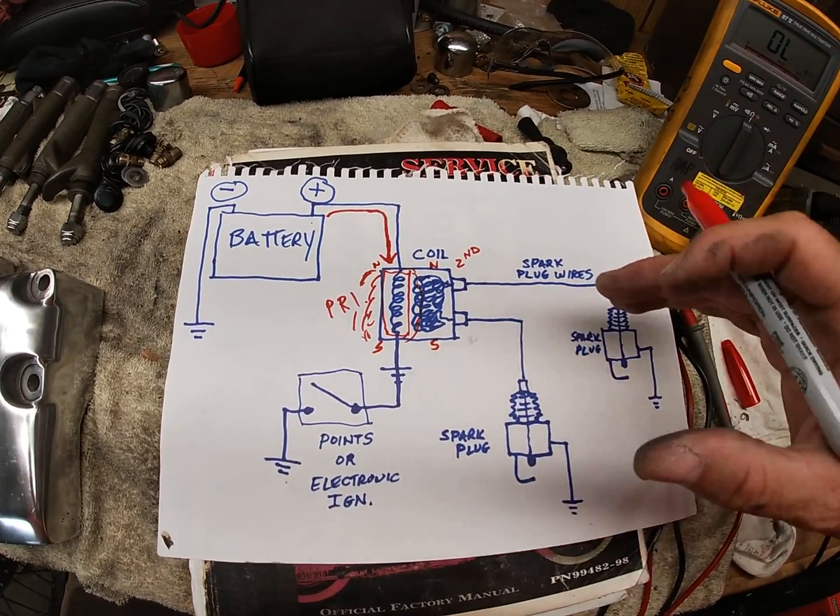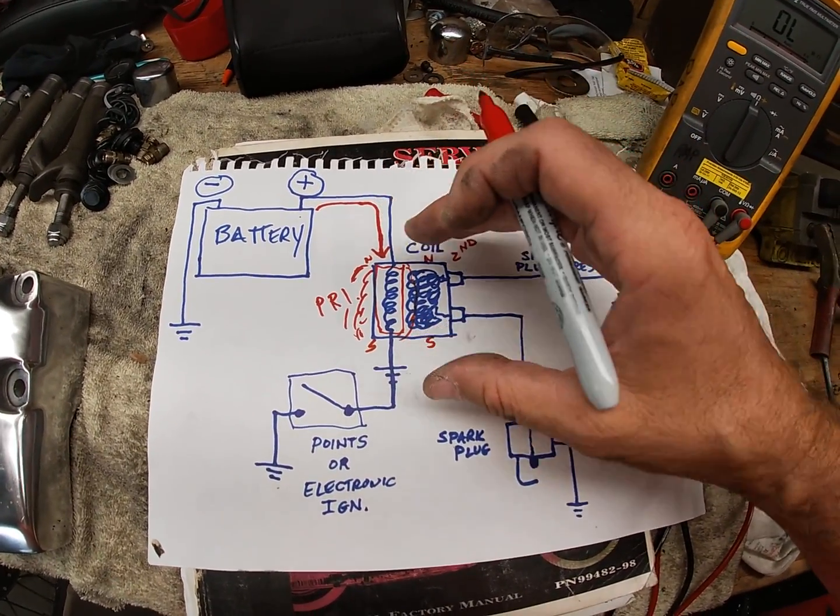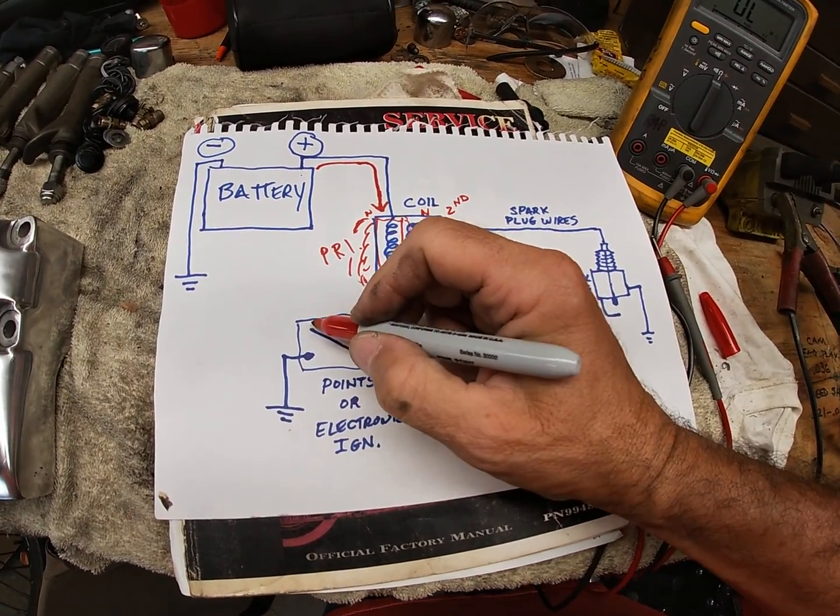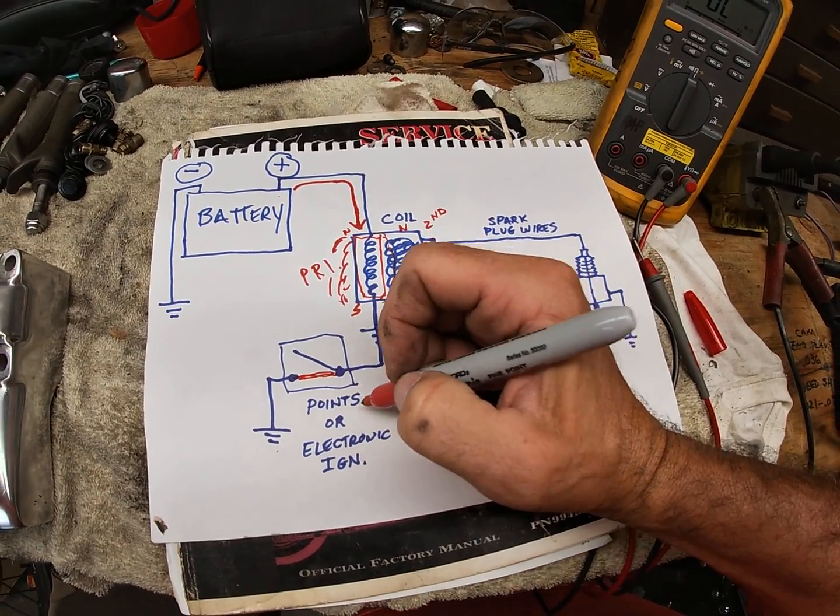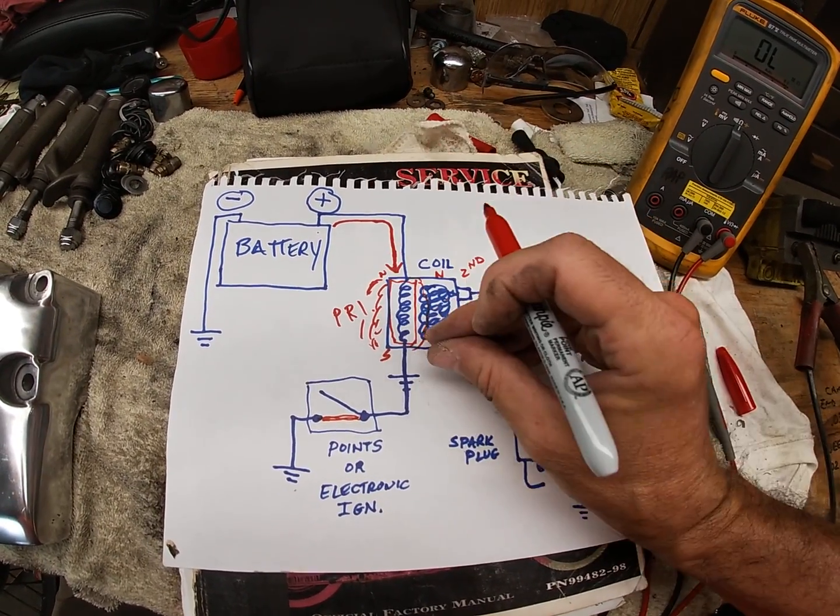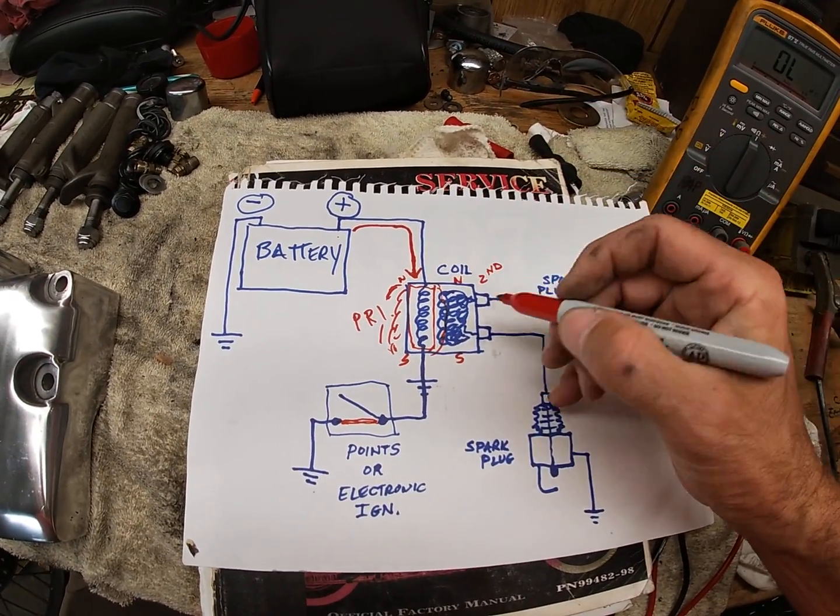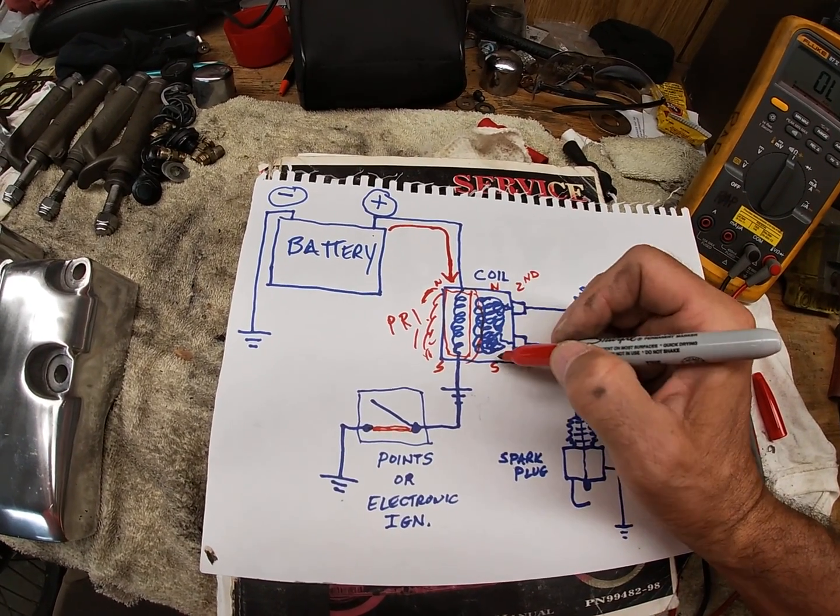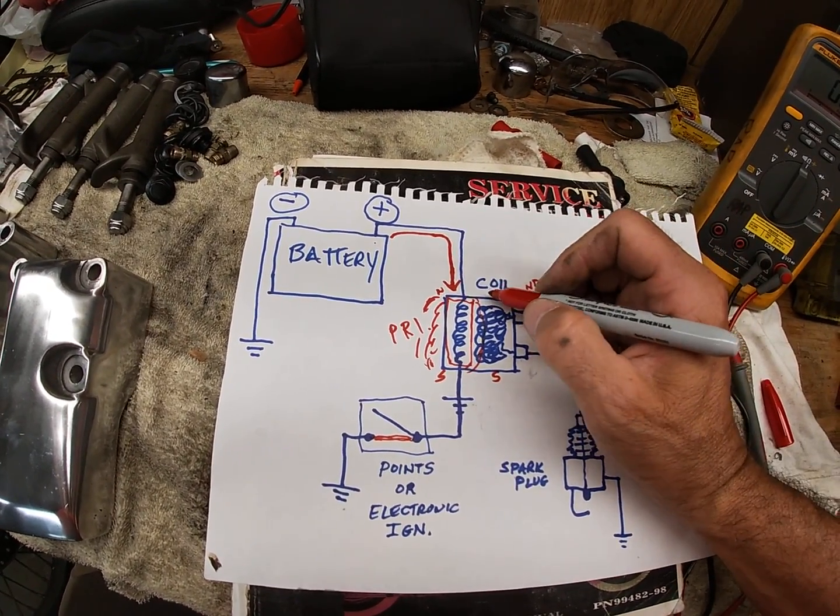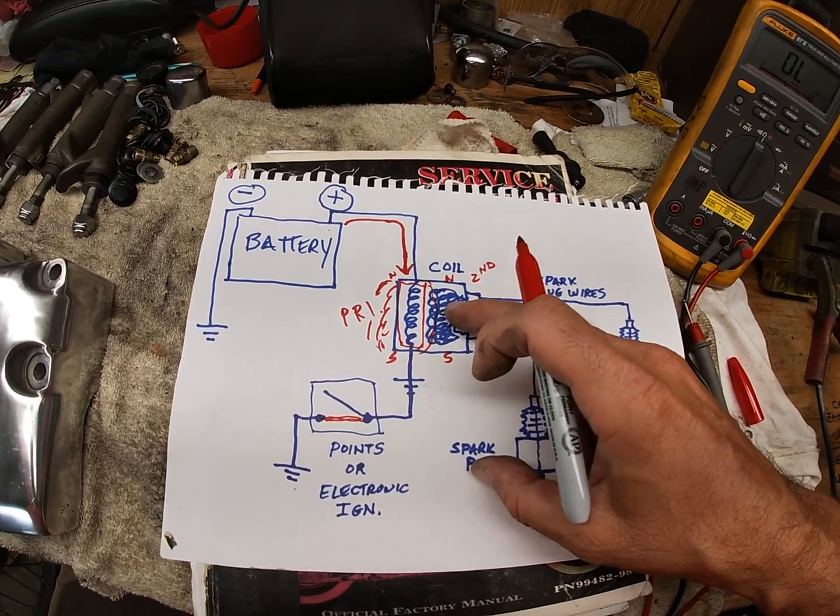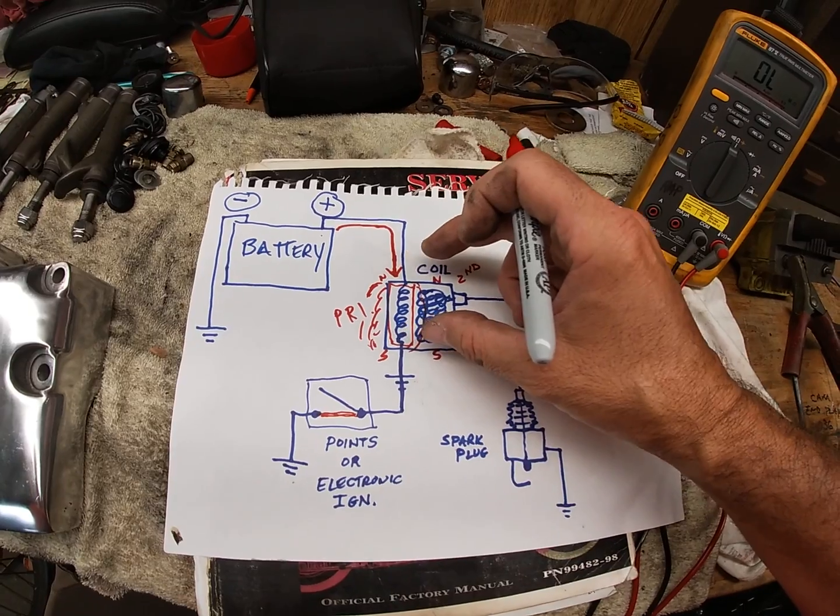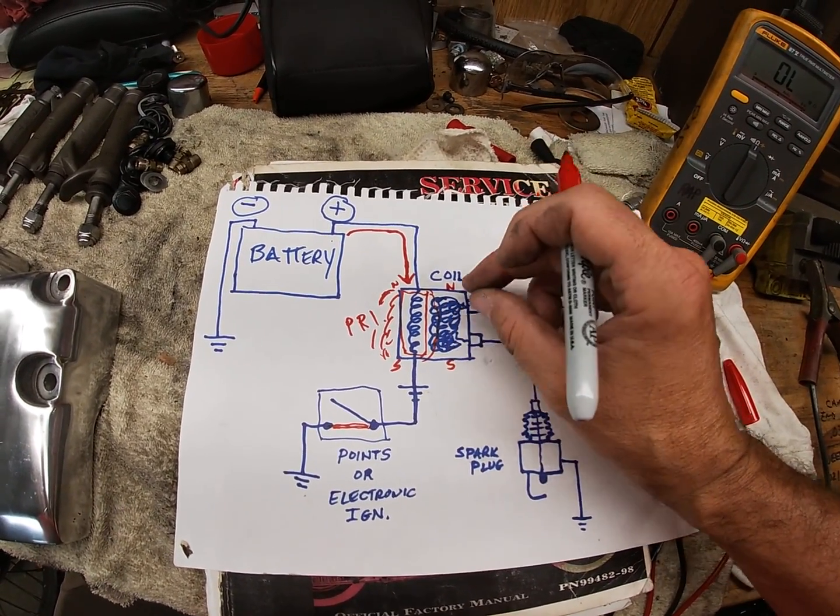Now nothing happens during this time. You're not going to get spark. The only thing you're going to do is build this magnetic field up. Now what happens is when the points open like they are here, so in other words you build that magnetic field when they're closed. When the points open, this magnetic field on the primary collapses. And when it collapses, it causes it to collapse over on the secondary side.